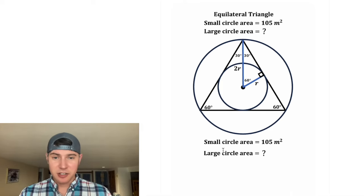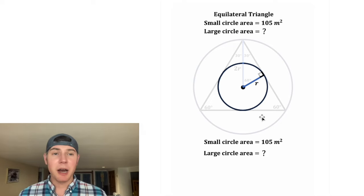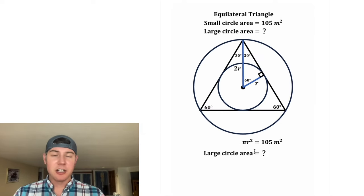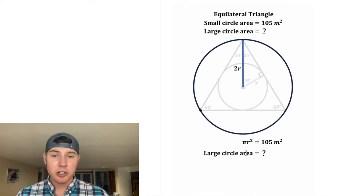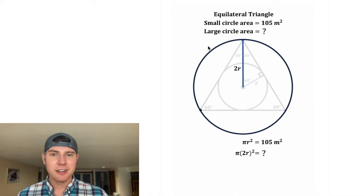Let's focus on the small circle area. The area of a circle is pi times the radius squared. In this case, it's going to be pi R squared. Now let's focus on the larger circle. The area of the large circle is also going to be pi times the radius squared, but the radius for this one is 2R.